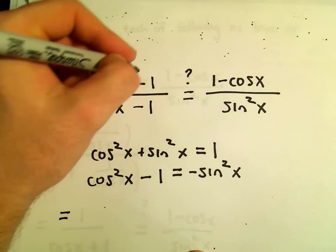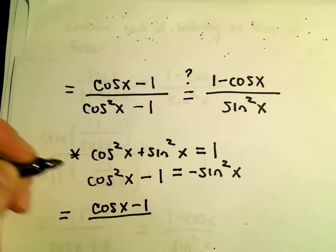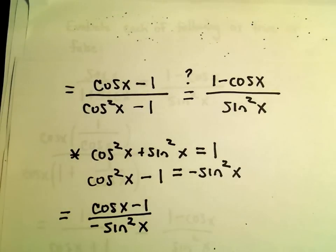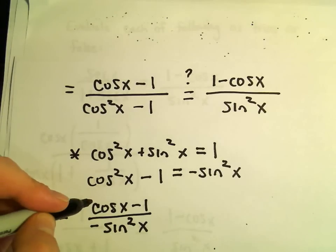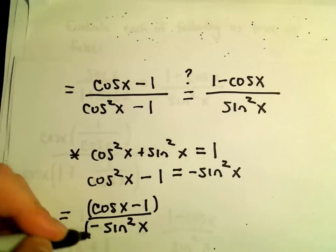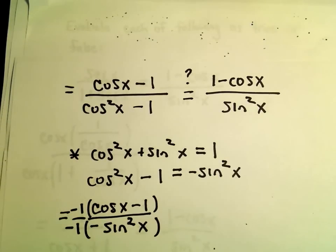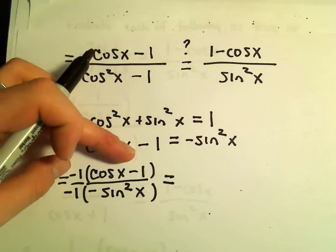So what we're left with on the left side, we've got (cos(x) - 1)/(-sin²(x)). But what we can do now is multiply the top and the bottom by -1.